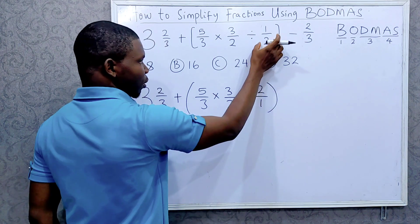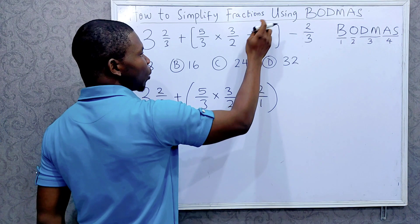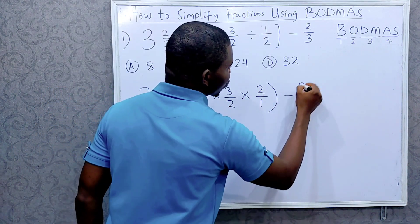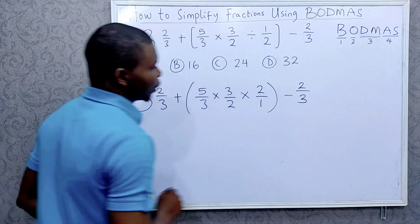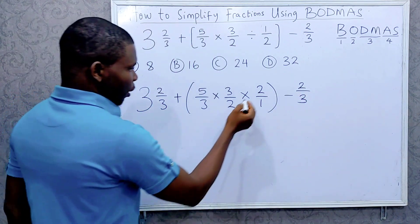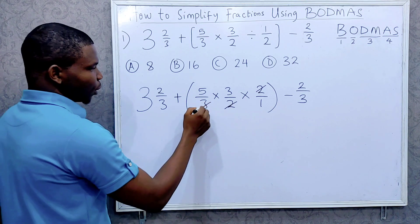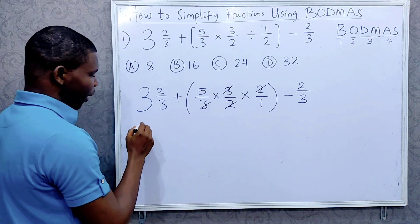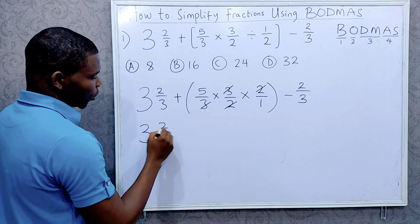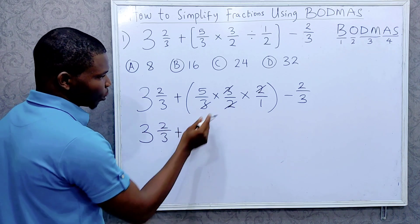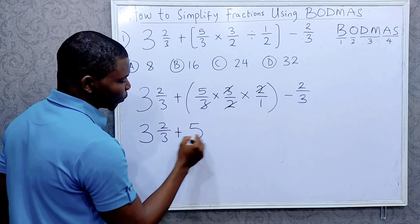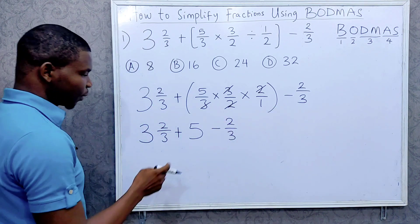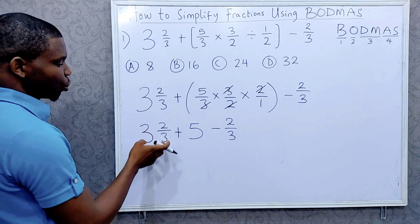When you are dividing a fraction you can simply change the division to multiplication and invert the fraction, so this 2 will go up and 1 will come down, minus 2 over 3. So we are left with 5 over 1, which is still 5. This will be 3 and 2 over 3 plus what's in the bracket, which is now 5, then minus 2 over 3.